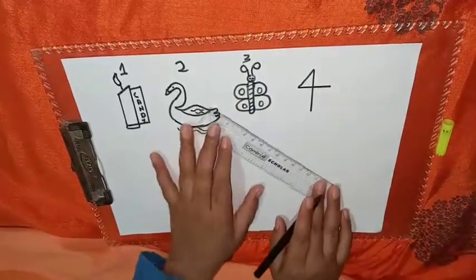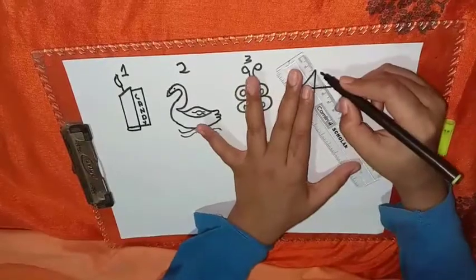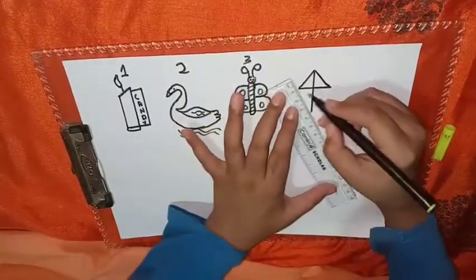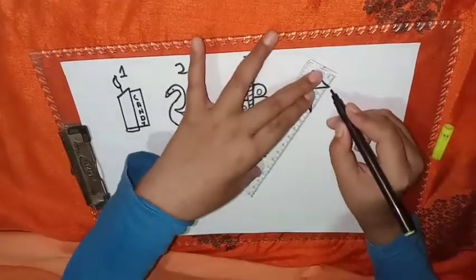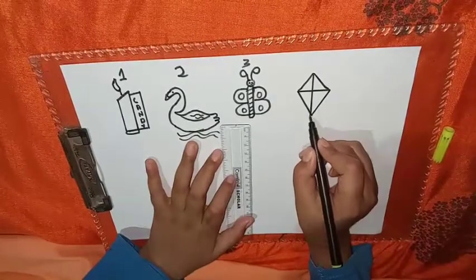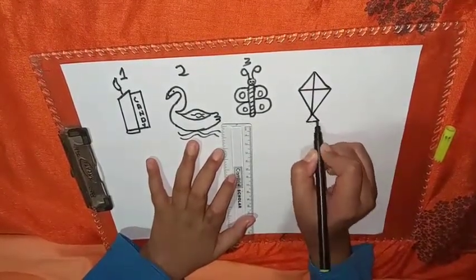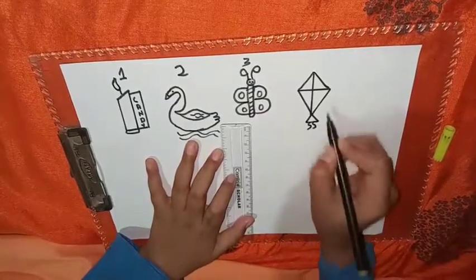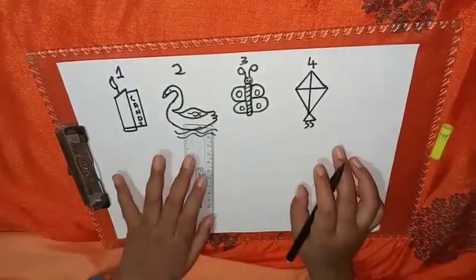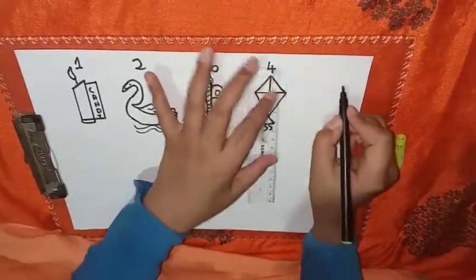Friends, this is number four. Friends, guess what I am drawing. Yes friends, you guessed it right, it is a kite. Now friends, number five.